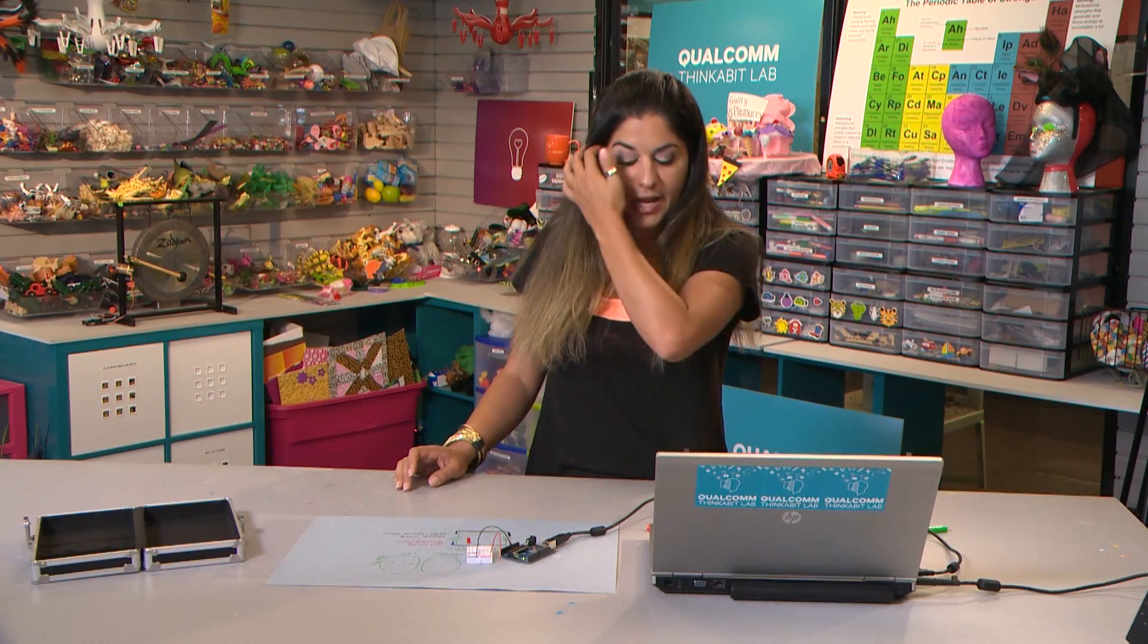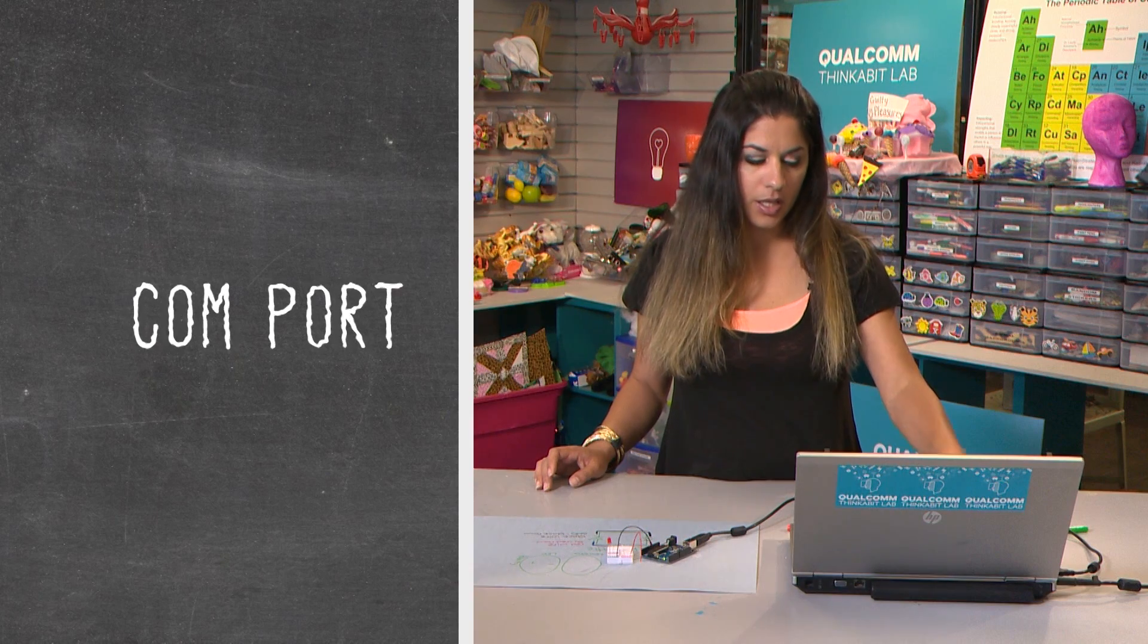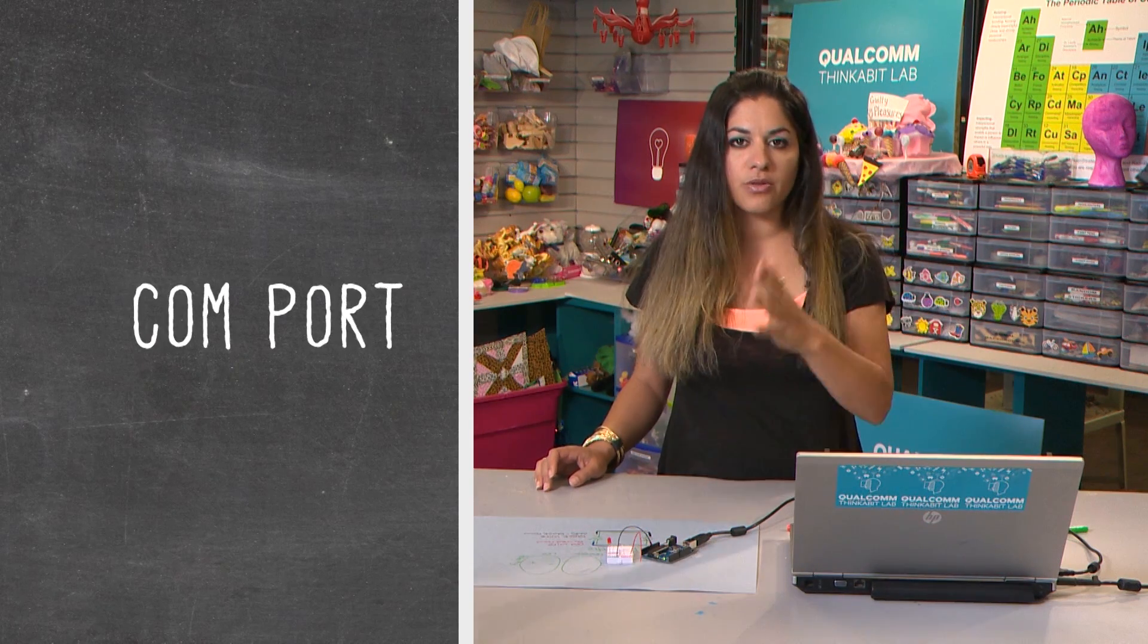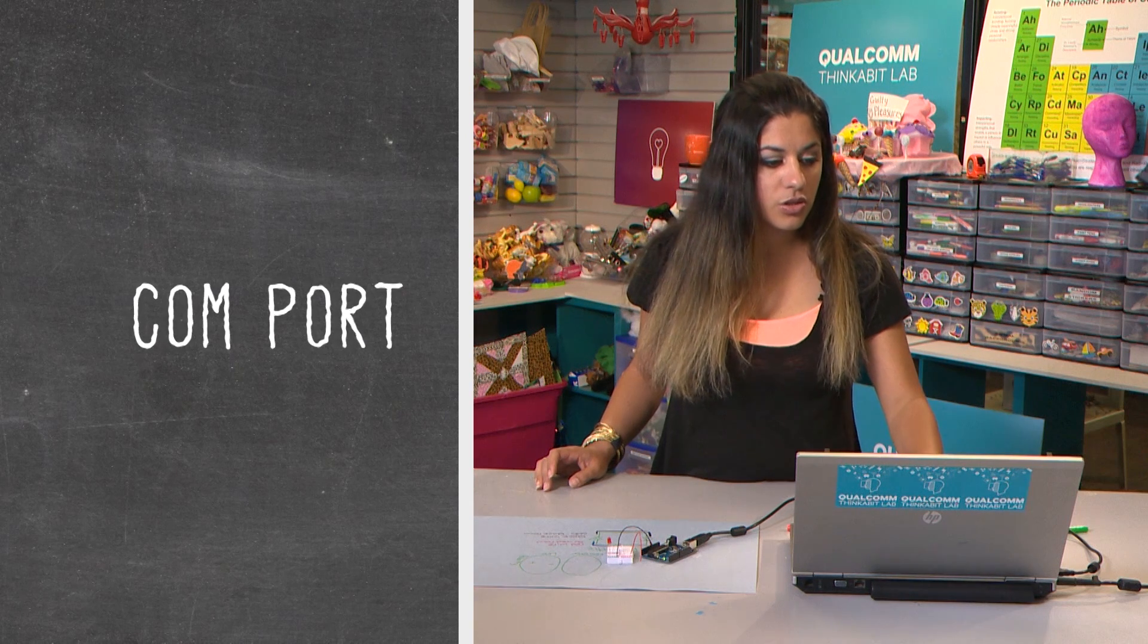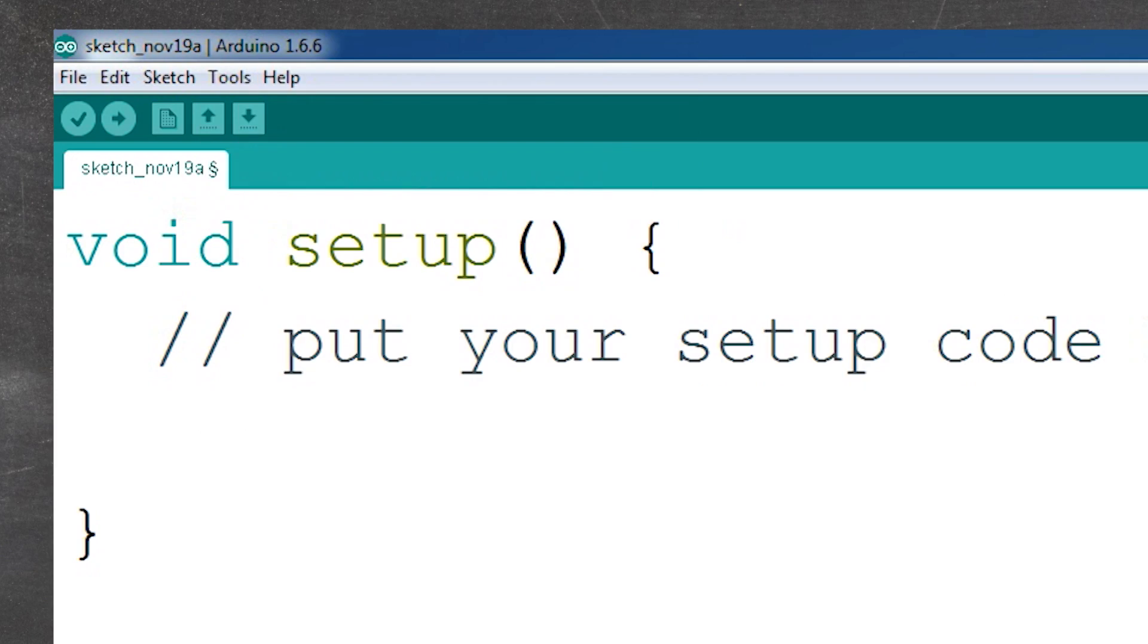And the first thing you want to do whenever you connect a new Arduino is to make sure you're going through the right COM port, okay? It's like going through the right door. You know, you want to make sure that your message is actually going through the right channel. So to do that, all you're going to do is go to Tools, Find Port, and then find the COM number that's associated with your Arduino. Click on it, and you should be good to go.